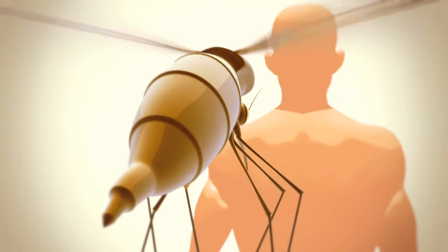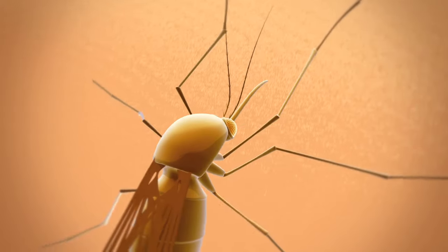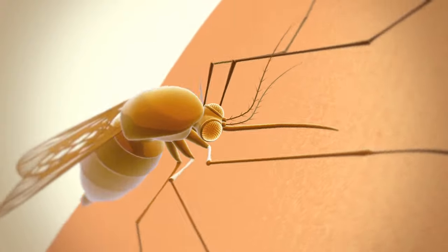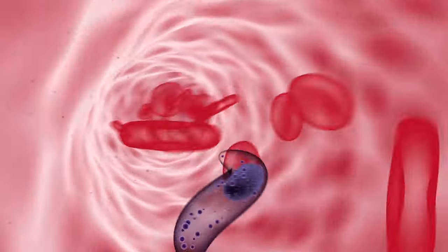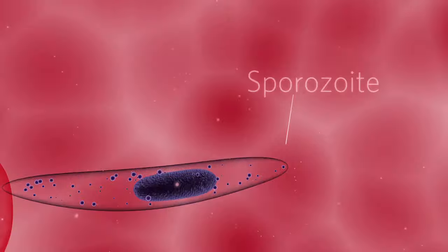The malaria parasite's life cycle is very complex, involving many stages. As the mosquito feeds, malaria sporozoites enter into the human bloodstream.